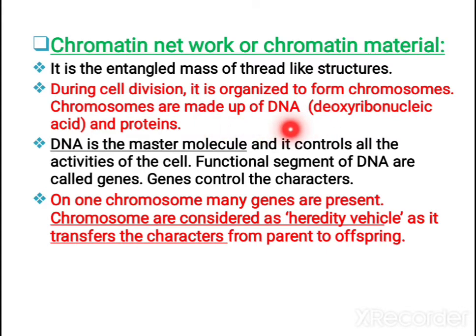Chromosomes are made up of DNA, that is deoxyribonucleic acid, and proteins. DNA is the master molecule — it controls all the activities of the cell. The functional segment of DNA is called a gene. Genes control the characters. You resemble your parents and grandparents because genes are transferred from one generation to another — that is the hereditary material. Many genes are present in a single chromosome, and chromosomes are called the hereditary vehicle.